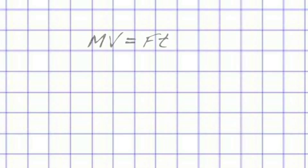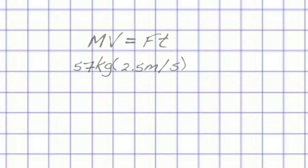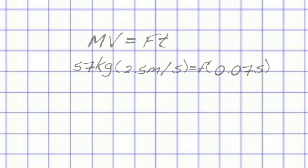We used the average weight of a woman for the mass and calculated velocity, which is the average distance divided by time. Afterwards, we figured out how long the foot was touching the ground, using that as our time.